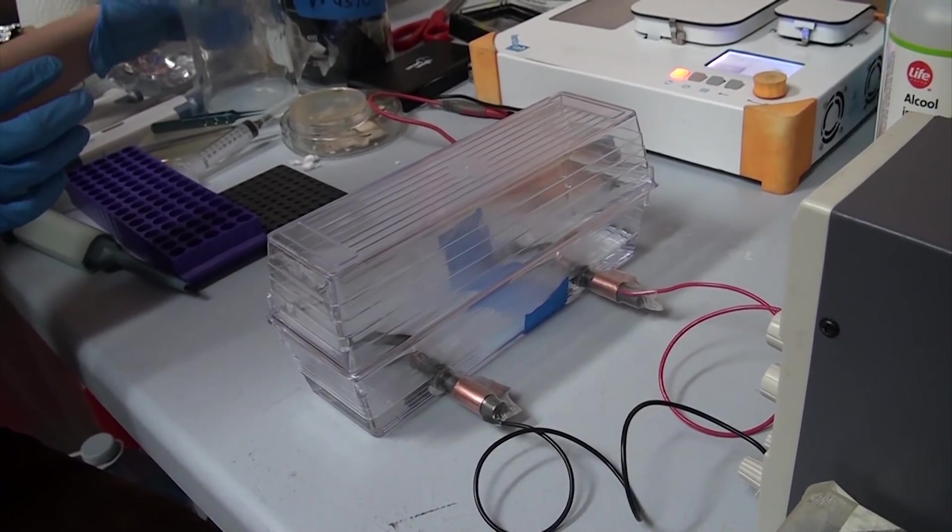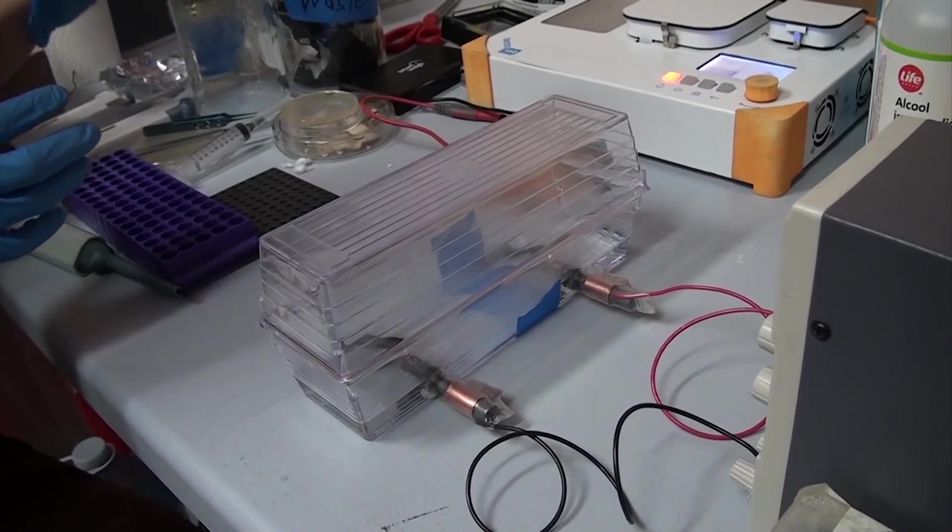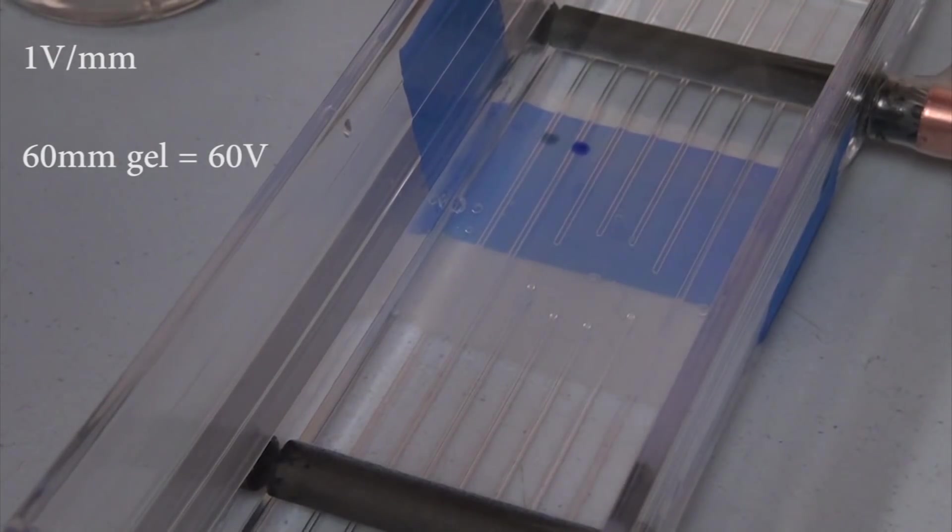For our first test, I'm using a benchtop power supply, but this wasn't actually strong enough. The general rule is that you need 1 volt per millimeter of length of gel. My casting tray is about 60 millimeters long, so I need about 60 volts, which is double what my power supply can put out.